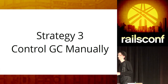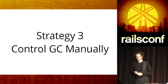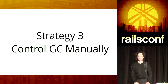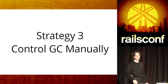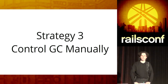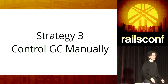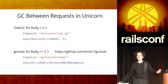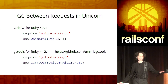Third strategy: control GC manually. I'm not talking about doing GC disabled. You might find advice to disable GC, then do something really heavy, and then enable it — just don't do it, especially if you deploy on Heroku or any other system like that. Why? Because you will run out of memory pretty fast. It's not a good idea to disable GC. What I mean by manual control is this: you should force run GC between requests in your web application.